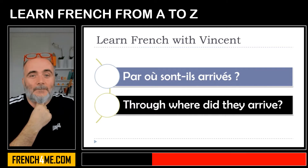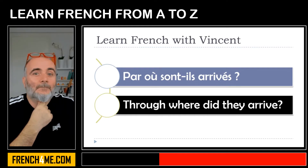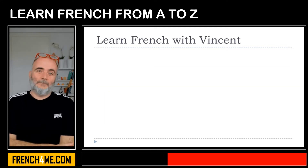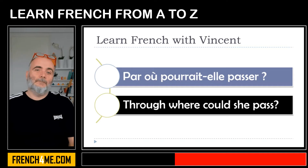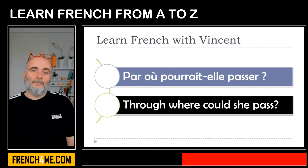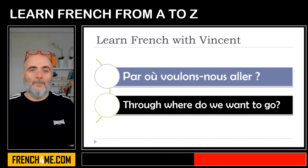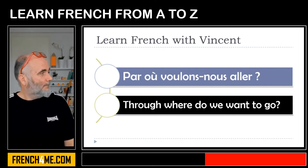Through where did they arrive? Par où sont-ils arrivés ? Par où pourrait-elle passer ? Through where could she pass? Par où voulons-nous aller ? Through where do we want to go?